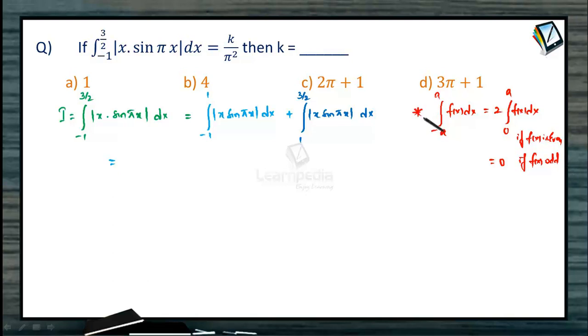Now we use this result here as the limits are from minus 1 to 1. Can you identify whether this function mod of x sin pi x is even or odd? x is an odd function. Sin pi x is an odd function. Therefore the product of these two odd functions is an even function.